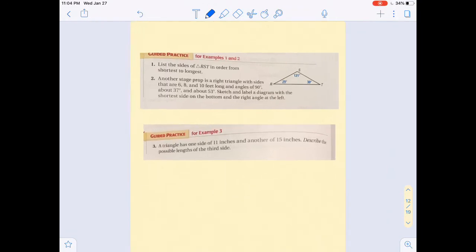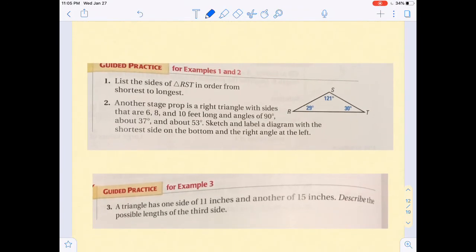That brings us to some guided practice. This first one says, list the sides of triangle RST in order from shortest to longest. Of course, they don't give you any side lengths. But they do give you the angle measures. So 29 is the smallest angle. So it's going to be opposite the smallest side. So that means that ST is the shortest. Then 30 is in the middle. So it is opposite this side. So whether you say RS or SR, that doesn't matter.